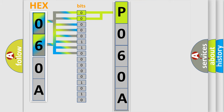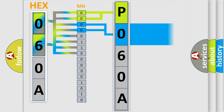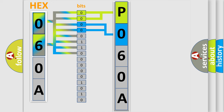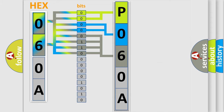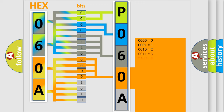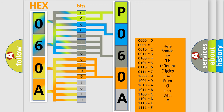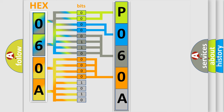The next two bits determine the second character. The last four bits of the first byte define the third character of the code. The second byte is composed of a combination of eight bits. The first four bits determine the fourth character of the code, and the combination of the last four bits defines the fifth character. A single byte conceals 256 possible combinations.